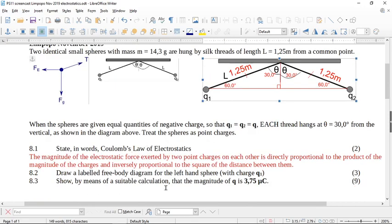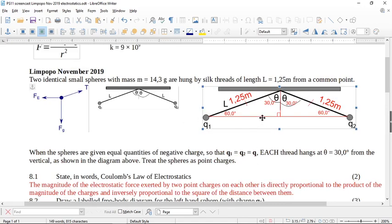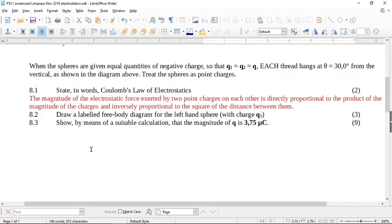So now it says to you, show by means of a suitable calculation, the magnitude of q is 3.75 microcoulombs. So if they say show, you have to end up with a sum, and the last line of the sum must say q equals 3.75 microcoulombs. But you can't put q in the question to begin with. So what you have to do is trust what you know. So first of all, let's write down what we know.